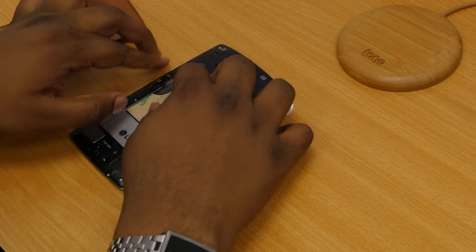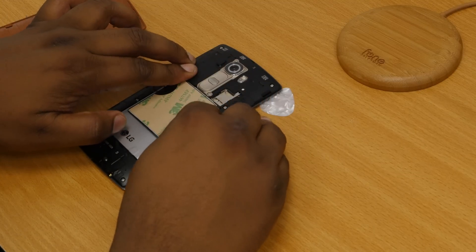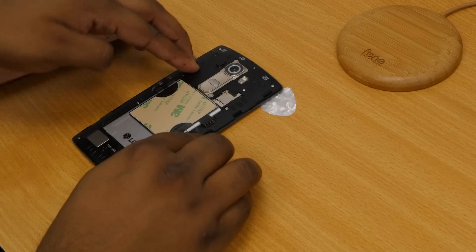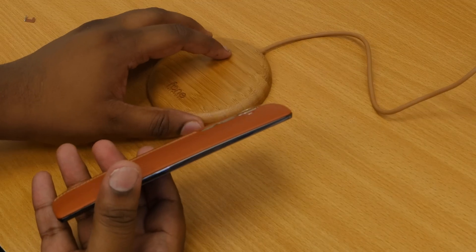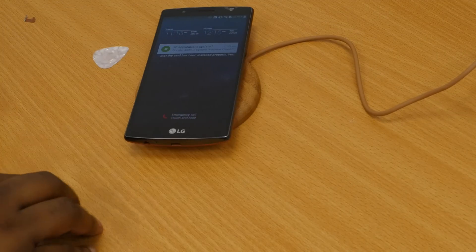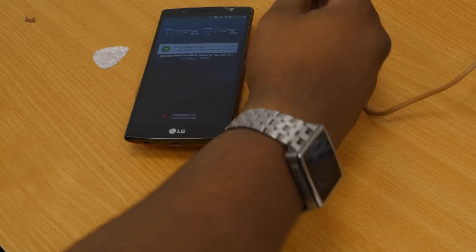Now to test that everything was installed properly. Let's put the back cover on the phone and test wireless charging with Woodpuck, which looks great together with the LG G4. As you can see, charging has initiated successfully.